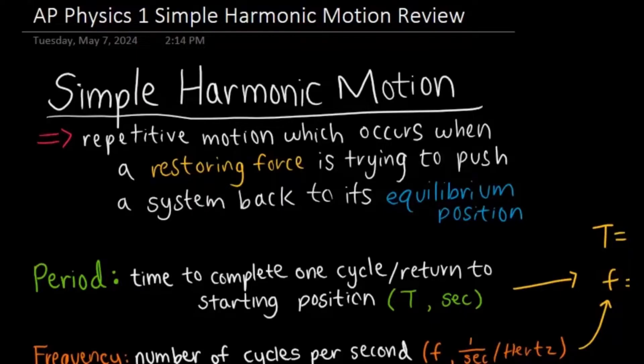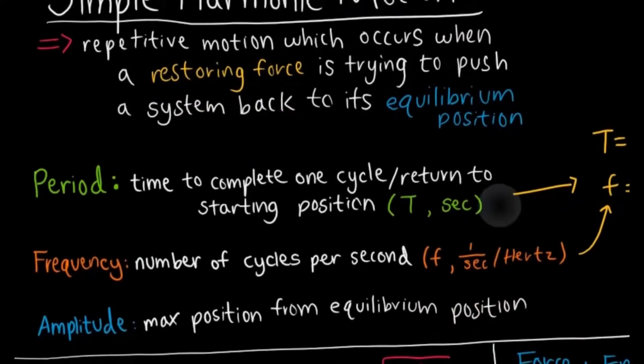So simple harmonic motion - what exactly is this? It's whenever you have a repetitive motion, and it's going to occur because of a restoring force which is always trying to push the system back to its equilibrium position. In these examples, you'll see conservation of energy, negligible friction, and stuff like that.